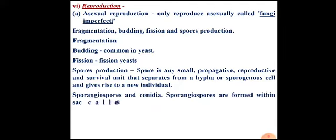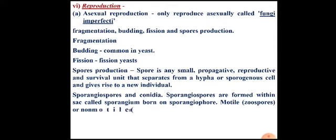Asexual spores are of two types: sporangiospores and conidia. Sporangiospores are formed within a sac called sporangium, which is borne on a sporangiophore. There are two types of sporangiospores: motile sporangiospores called zoospores, and non-motile sporangiospores called aplanospores.